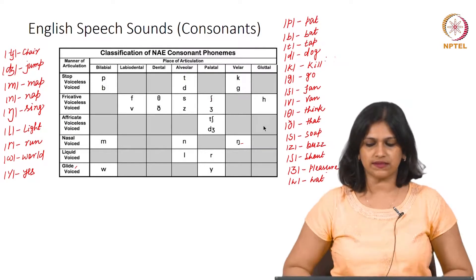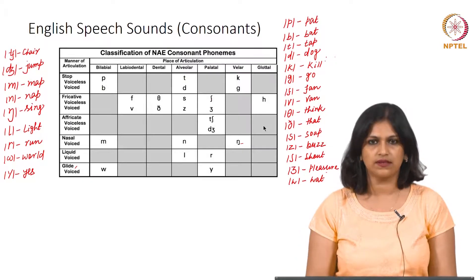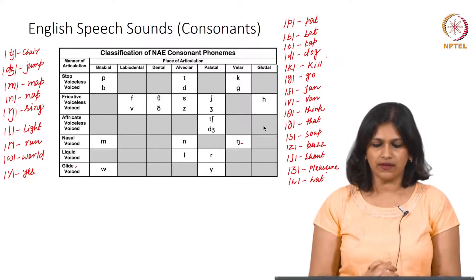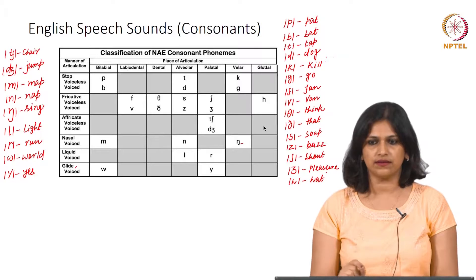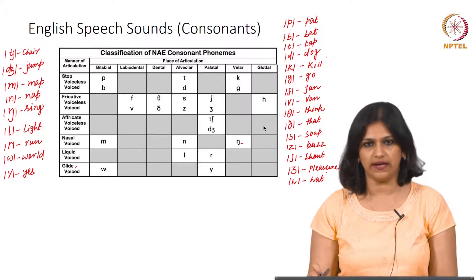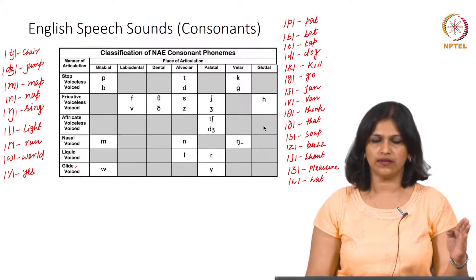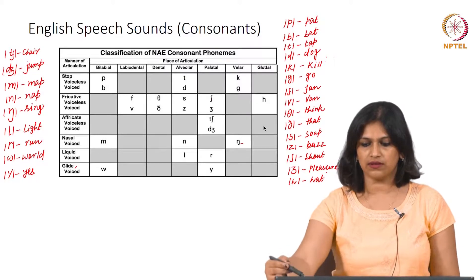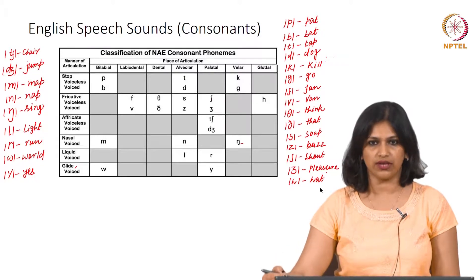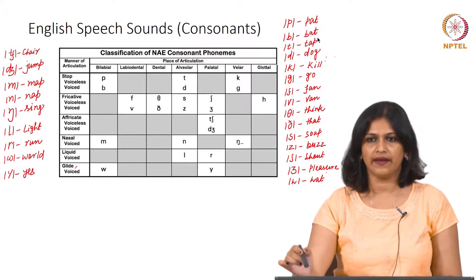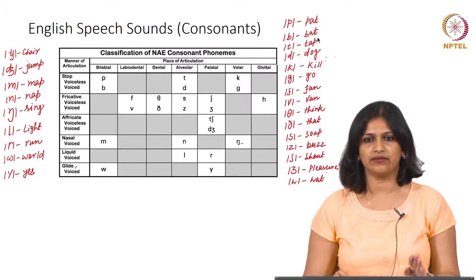We just got to know about the three different domains or dimensions of English consonant sounds. I will now let you know each of the sounds and its corresponding word. I am going to talk about the initial or final position of the sound. Each phoneme has a corresponding word and I will tell you which sound I refer to.